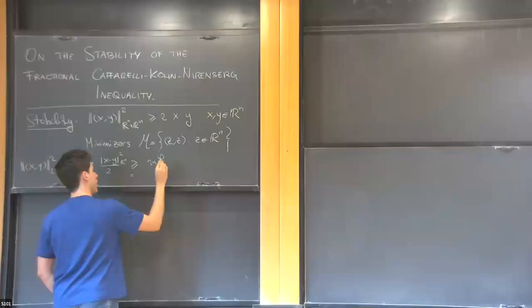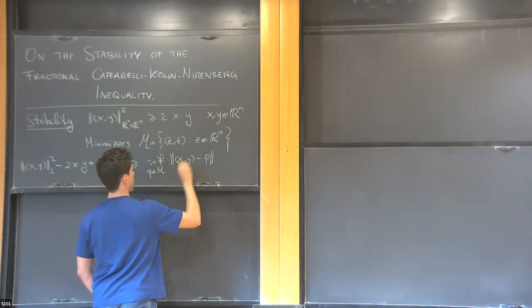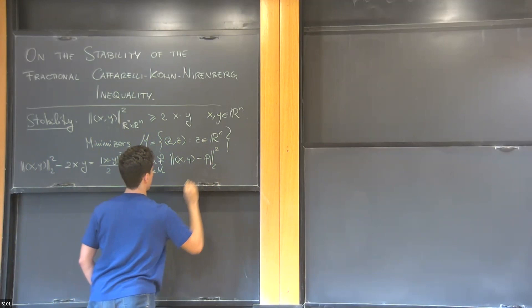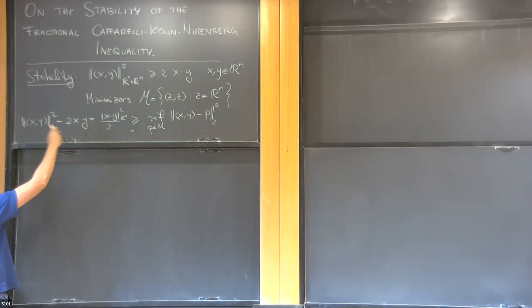Stability in this setting works as follows: you bring everything to the same side, and you notice this is exactly (x−y)²/2, which bounds the distance between the point (x,y) and the manifold M of minimizers — in the same norm appearing on the left-hand side. The idea of stability is that you have an inequality, bring everything to one side, and estimate your distance from the set of minimizers in the same norm on the left.